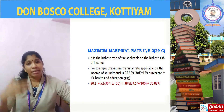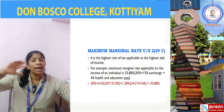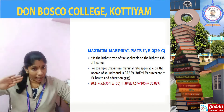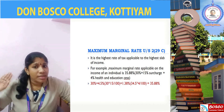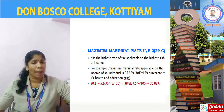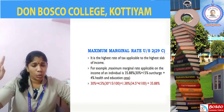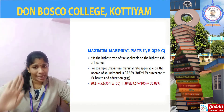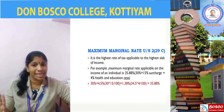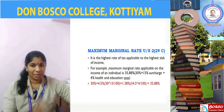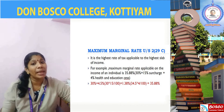Once again, maximum marginal rate is the highest rate of tax applicable to the highest slab of income. For individuals, the tax rates are 5%, 20%, and 30%. So the highest rate of tax applicable to individuals is 30%, which applies to the highest slab of income — that is above 10 lakh.